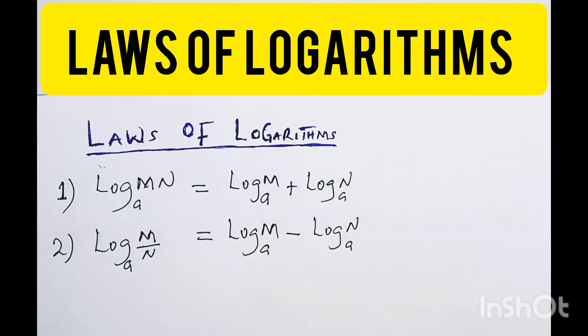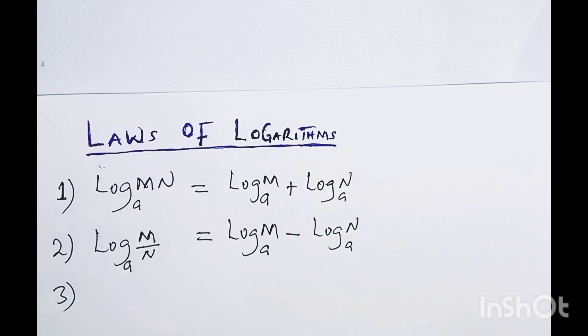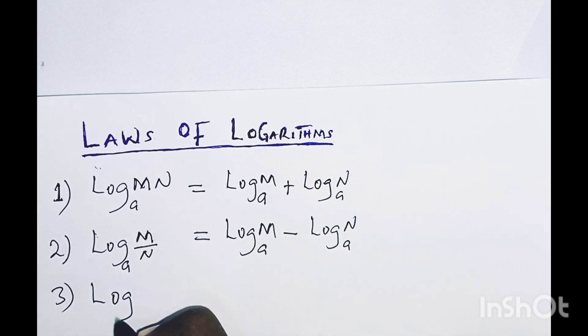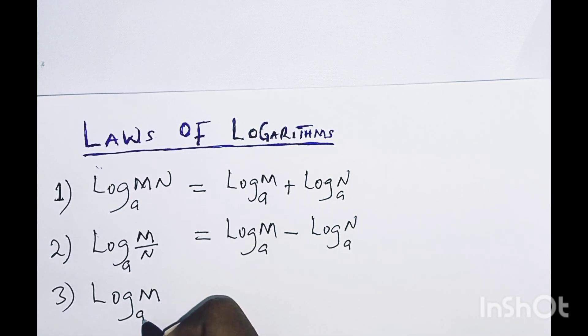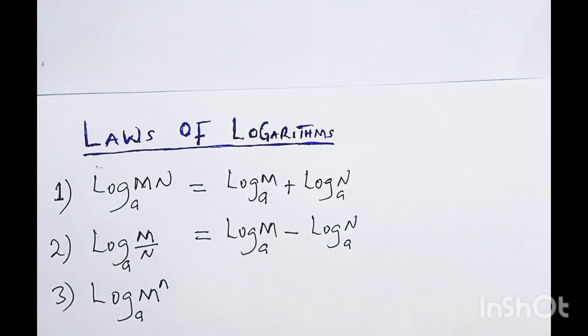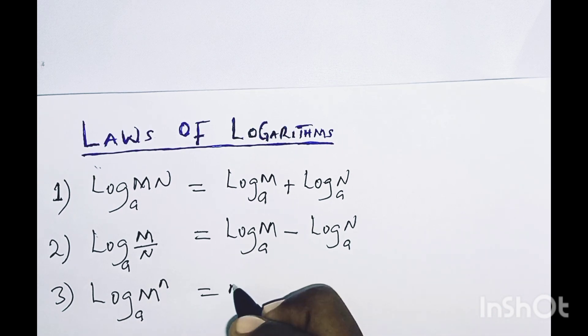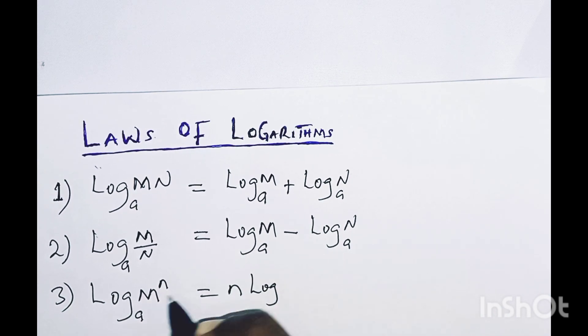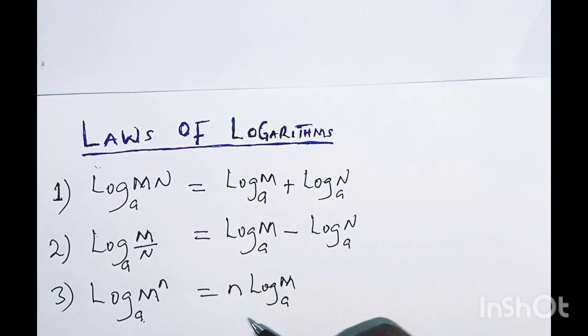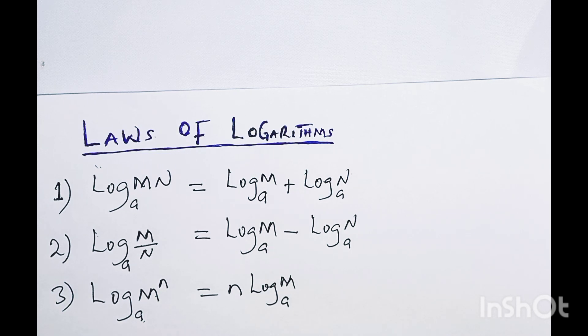Then we have another law, which is law number three. If you have log base a of M with a power n, for example, if this number is having a power, then you take the power back. You take n back, then you have n times log M base a. So this is the third law of logarithm, which is called power law.